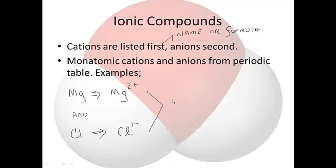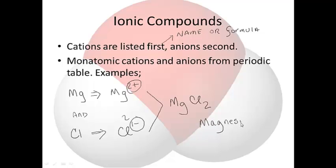Compounds are not charged, so you have to do a little bit of math. In order for +2 and -1 to add up to zero, you need two chlorides. The formula tells you the lowest whole number ratio. So the compound is magnesium chloride — you need two chlorides and one magnesium. The math: +2 plus two times -1 equals zero, which is what compounds are.